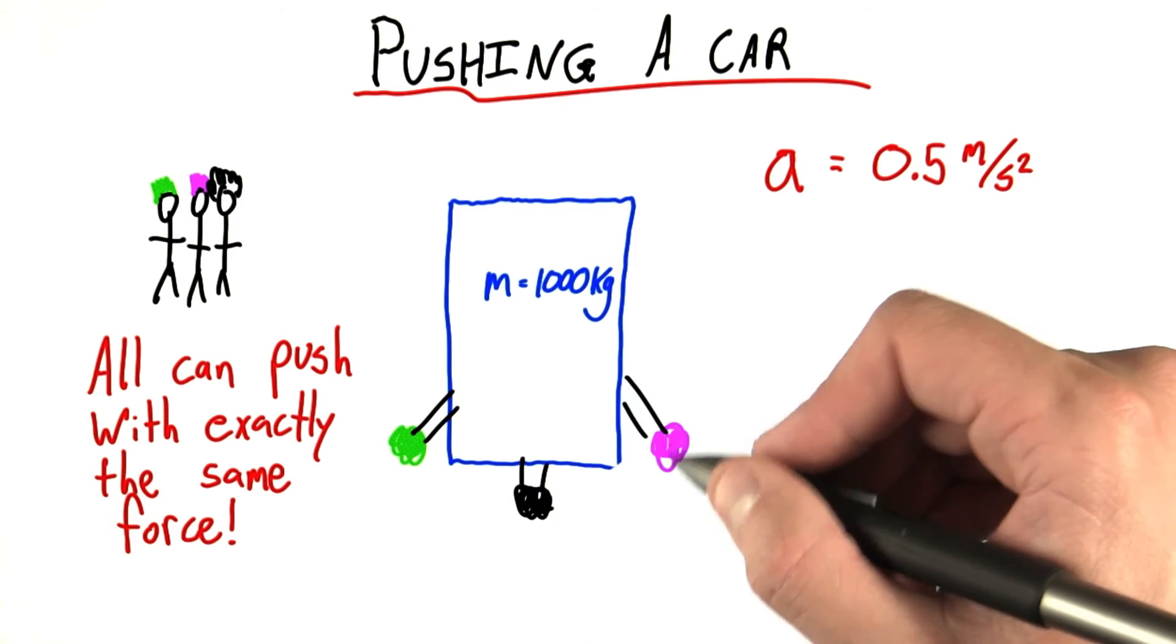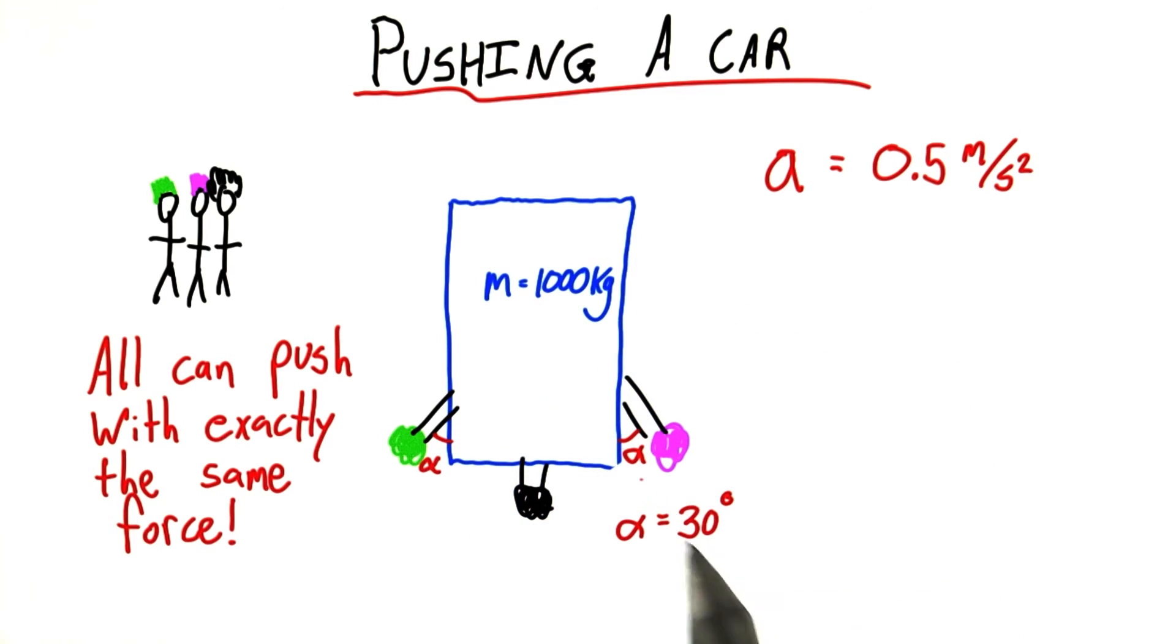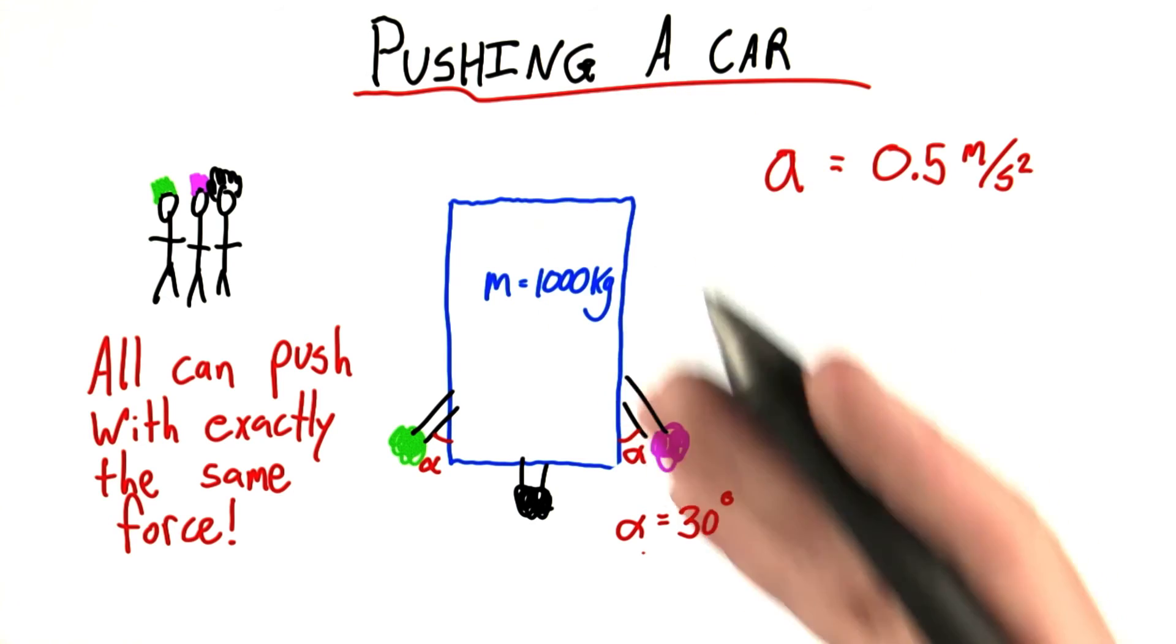The angle that the green and purple haired doctors are pushing with, we'll call alpha. For this problem, alpha is 30 degrees, so they're pushing at a 30 degree angle.